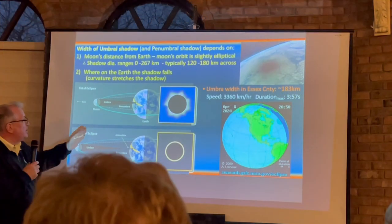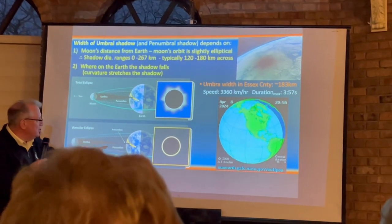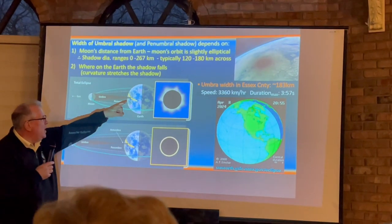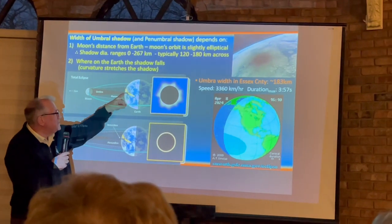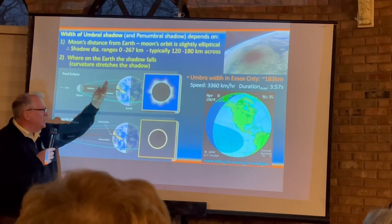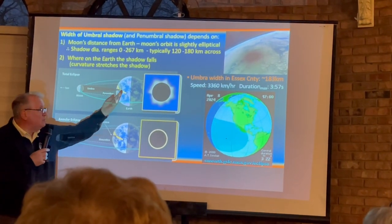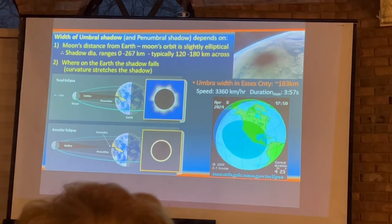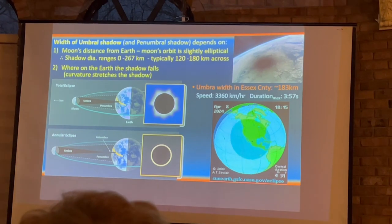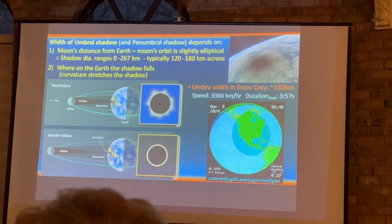How far away the moon is determines how many people are going to be able to see totality — it depends on the distance of the moon from the earth, but it also depends on the curvature of the earth.